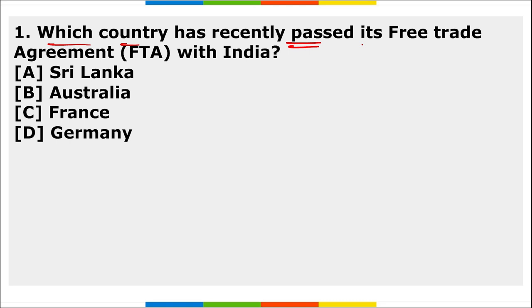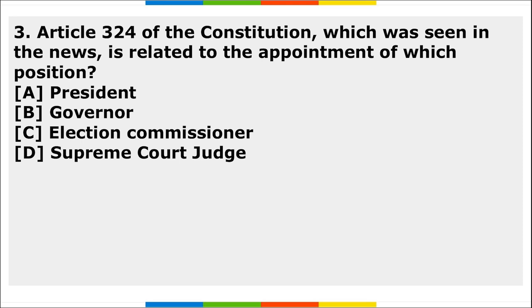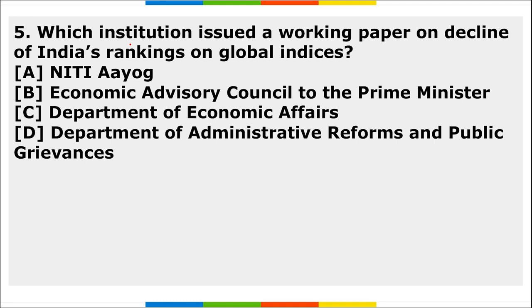Homework questions: (1) Which country recently passed its Free Trade Agreement with India? (2) Aritapatti has been notified as the first Biodiversity Heritage Site of which state? (3) Articles 3 to 4 of the Constitution, which were in the news, relate to the appointment of which position? (4) As per the recent OECD report, what is the GDP forecast for India for FY23? (5) Which institution issued a working paper on the decline of India's ranking on global indices?